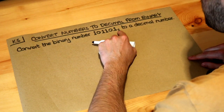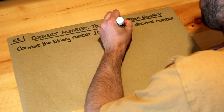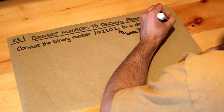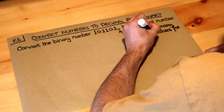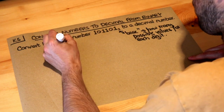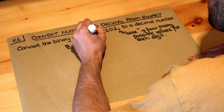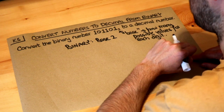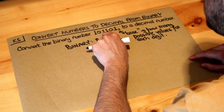This little number here, the 2, is not actually part of the number — it's known as the base of the number. The base tells you how many possible values there are for each digit. So for binary, the base is 2, meaning each digit only has 2 possible values — it can only be 1 or 0.